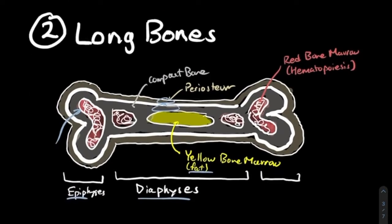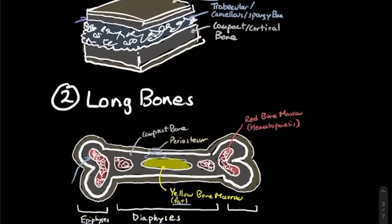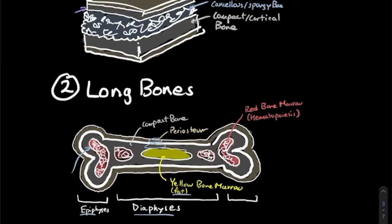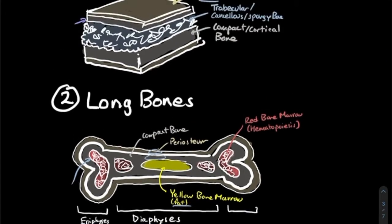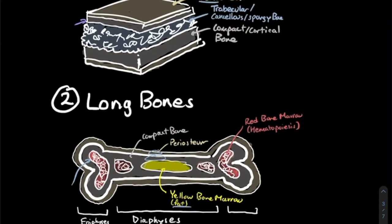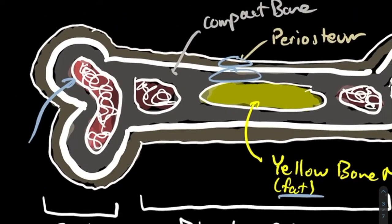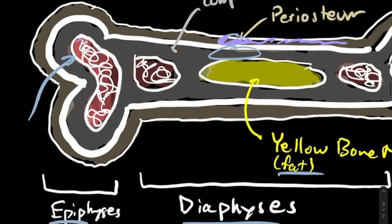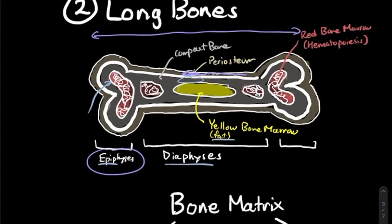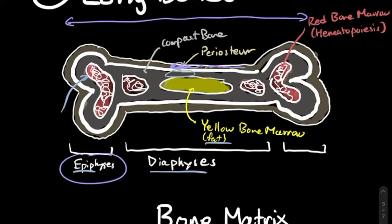Long bones are very similar to flat bones in many ways but have some important distinctions. A long bone has different segments corresponding to different things. Just like flat bones, they have the periosteum encapsulating the entire bone, then compact bone. At the epiphyses — the ends of the bone — we have our trabecular or spongy bone. But in the center, we actually have a hollow opening rather than spongy bone.